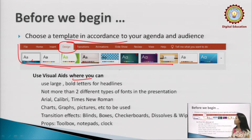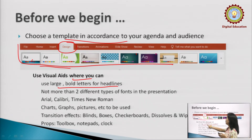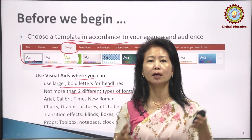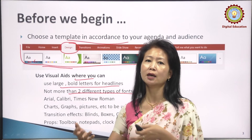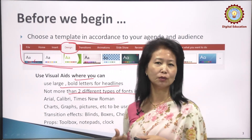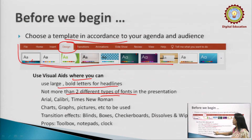The second thing is visual aids. Use large or bold letters wherever you want to highlight. You can use large letters for headlines. You have to remember that you can't use fonts from two very different families — you can't mix and match too many. You can use Arial, Times New Roman, Comic Sans, or Calibri, but maximum two different font types. The best is to use either one of them — it looks more professional.